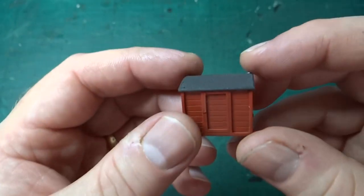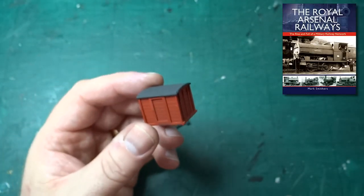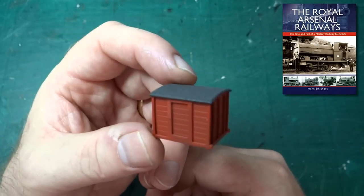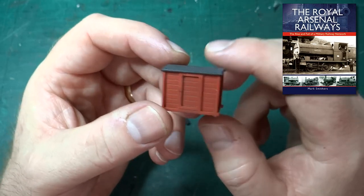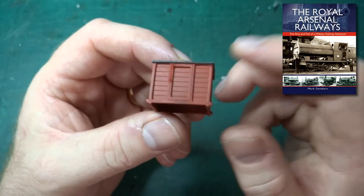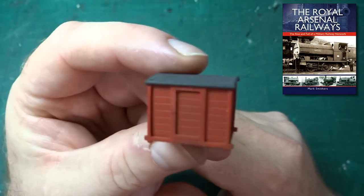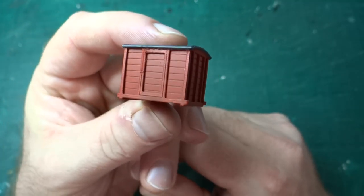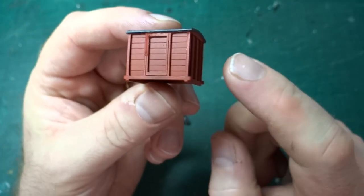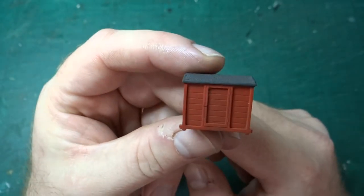I got the drawings for this from Mark Smithers' book on the Royal Arsenal Railways, and it's a really interesting book. I'll put a link in the description. It contained a drawing by Jeremy Tilson, which is slightly bigger than this model but not hugely bigger. Unfortunately, there are a few issues with the drawing.